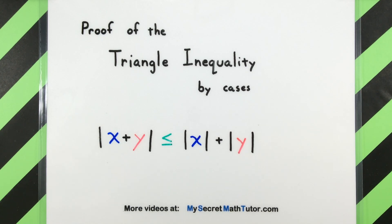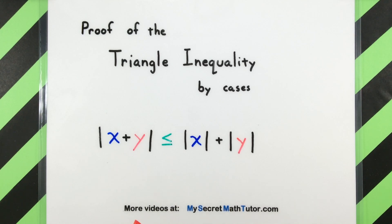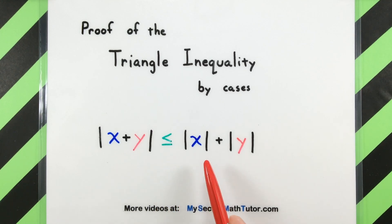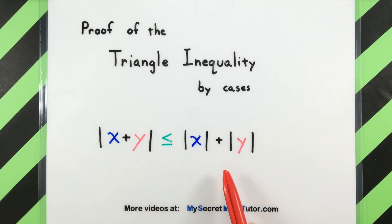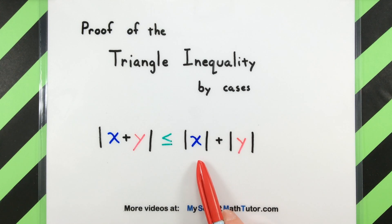The triangle inequality is the one where you're taking the absolute value of the sum of a couple of numbers, and that this is less than or equal to the absolute value of each individual number added together. So essentially what it's telling us is that we could split up the sum, but we may get something bigger, taking the absolute value of each of these individually.